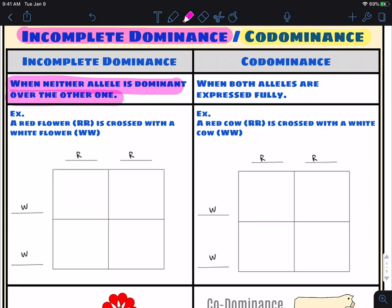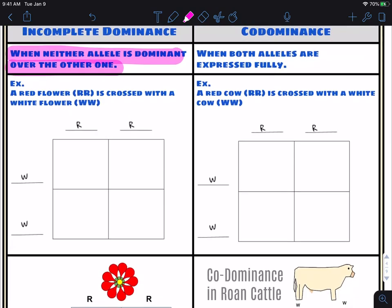So in certain situations, there are things where you can take something like a white flower and a red flower, and we don't end up with one dominating over the other one. What we end up with is that you get a blend between the two. You get white and red, you get pink.